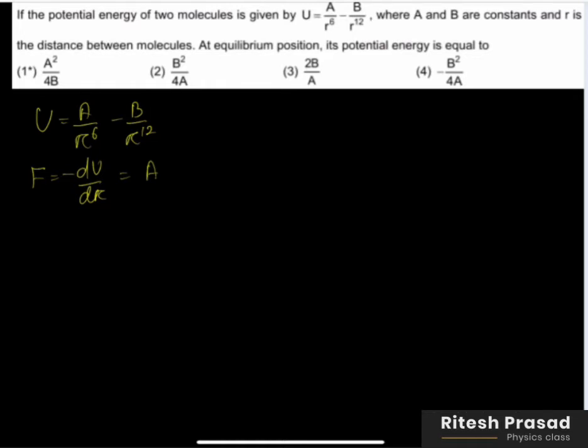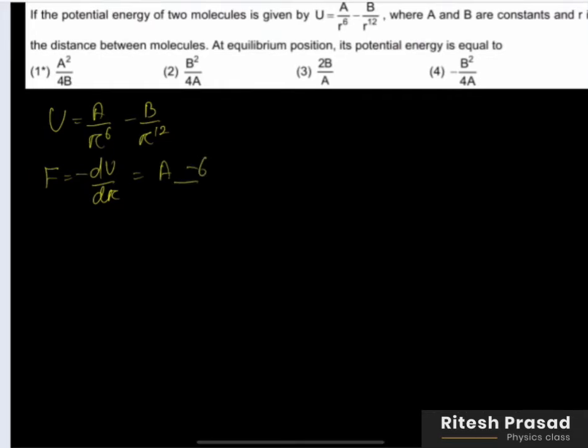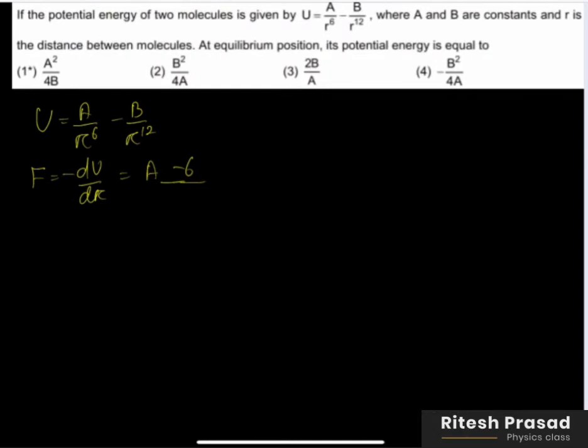Minus dU by dr: A is constant, derivative of 1 by r to the power 6 is minus 6 by r to the power 7. Similarly, this is minus B constant, derivative of 1 by r to the power 12 is minus 12 by r to the power 13. And at equilibrium, force equals zero, so equate this equal to zero.